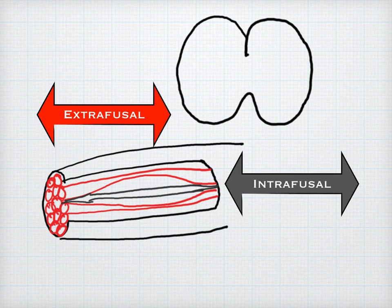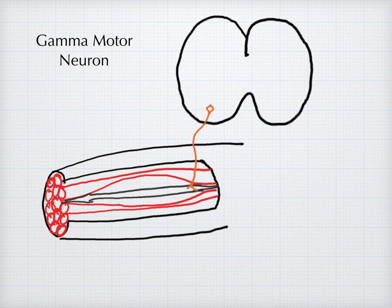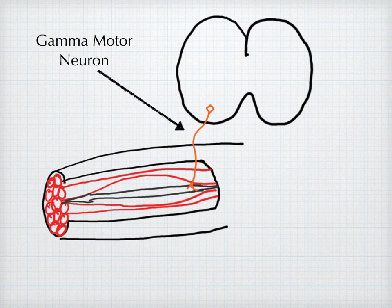The length of the intrafusal muscle fibers are regulated by the gamma motor neuron.